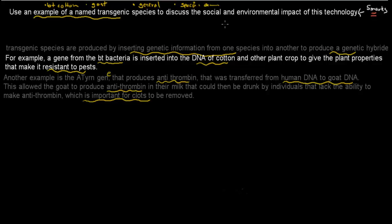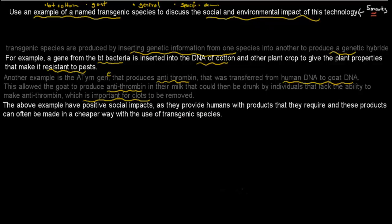Here I've quickly stated two examples and what benefits they have. Now I tie that to the social and environmental impact. The above examples have positive social impacts as they provide humans with products that they require, like pest-resistant food and antithrombin in milk. These products can often be made in a cheaper way with transgenic species. These are the positive social impacts of this technology.